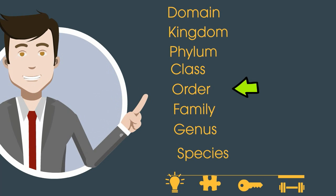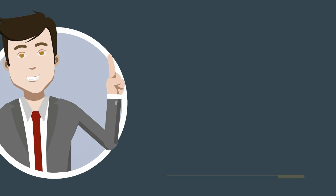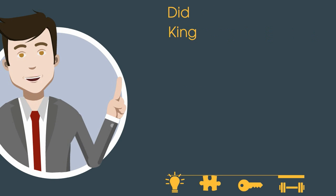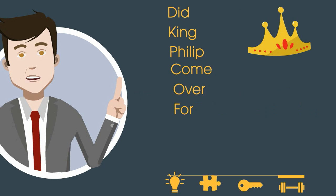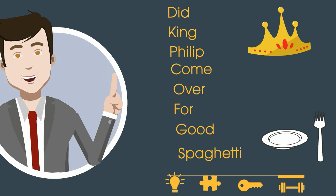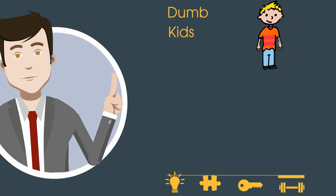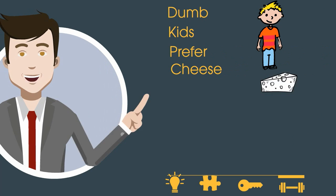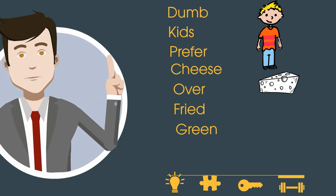So let's look at some mnemonic devices that can help you memorize this — I'll provide three. The first is: "Dead King Philip Come Over For Good Spaghetti." Next: "Dumb Kids Prefer Cheese Over Fried Green Spinach."